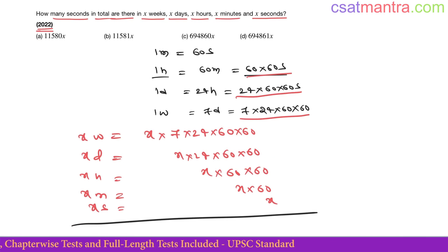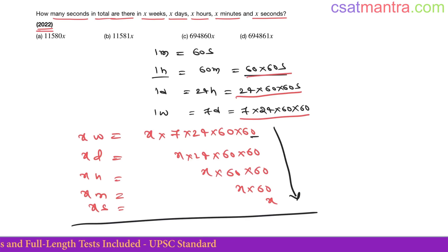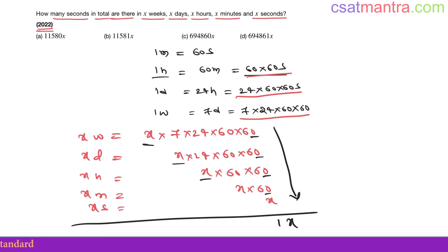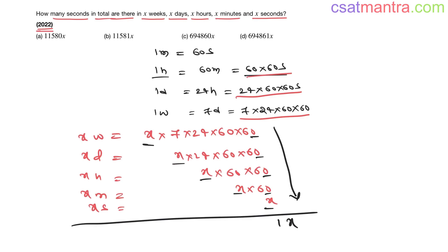If you add all of this, x is common in all terms, so take x outside. The last digit would be one. So either this or that can be our answer.